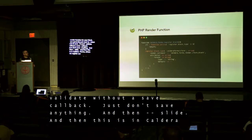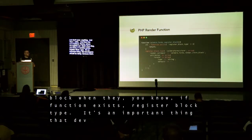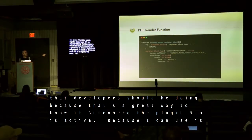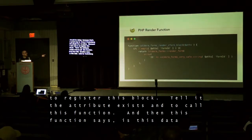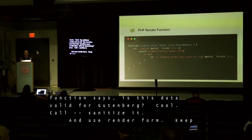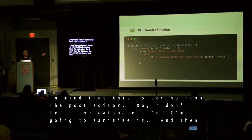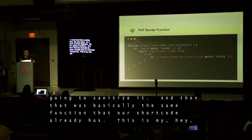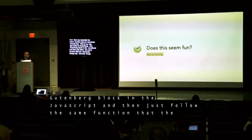If you're using a PHP render function for your block, you generally just need to return null at save. This is in Caldera Forms where we register our block. Using if function_exists register_block_type is important — that's a great way to know if the Gutenberg plugin or WordPress 5.0 is active. We tell it the form_id attribute exists, call this function which checks if the data is valid, sanitizes it, and uses render_form — which is basically the same function our shortcode already had. So this is my 'get ready for Gutenberg': use a Gutenberg block to come out of JavaScript, and then just call the same function the shortcode always did.